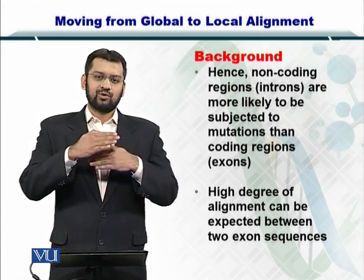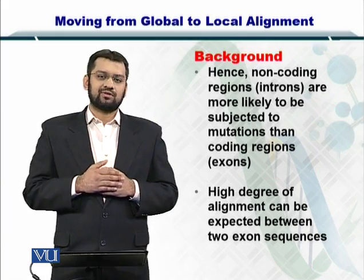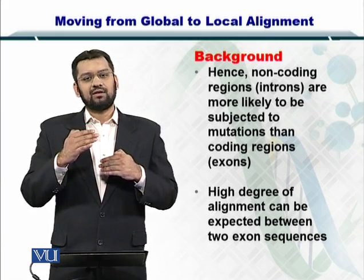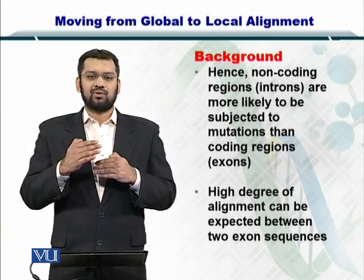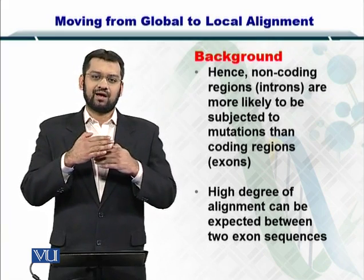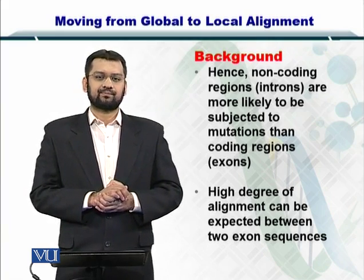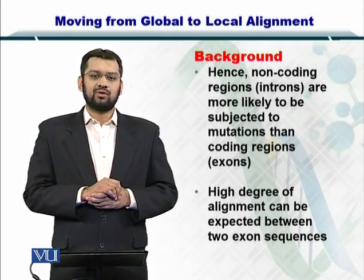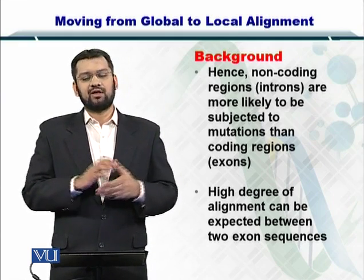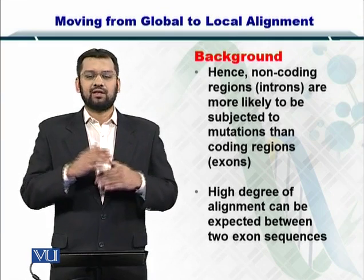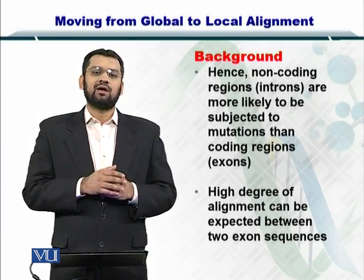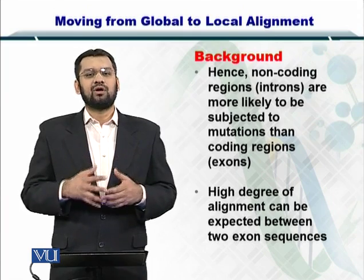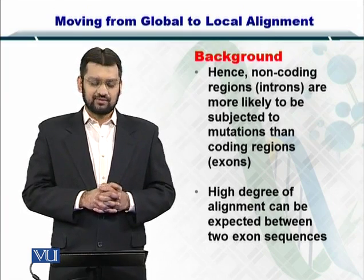So if you have two DNA sequences of coding regions, then there is a very high probability that you will have a very nice alignment. But if the two sequences have non-coding regions, then the alignment will not be a good one, as evolution would have led to a lot of mutations in the sequence.